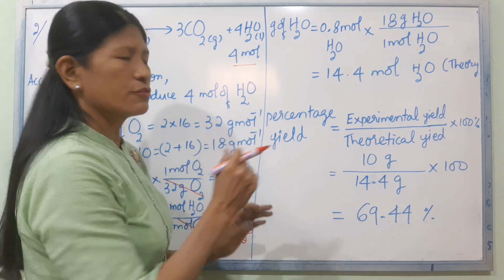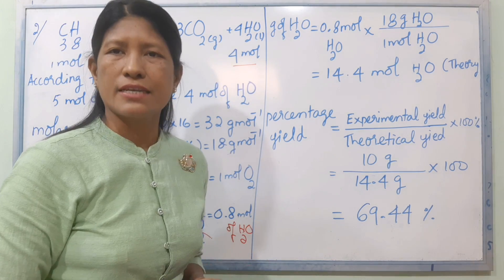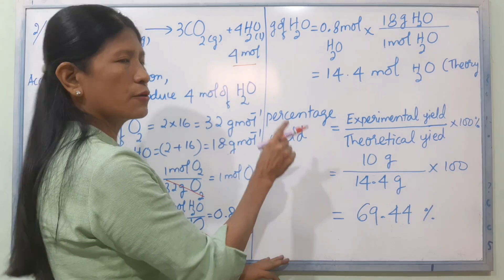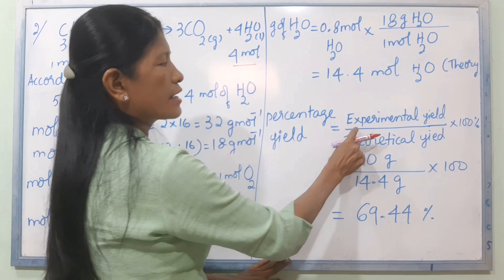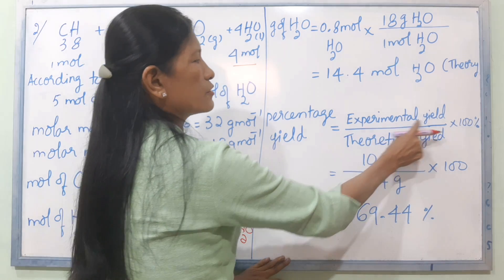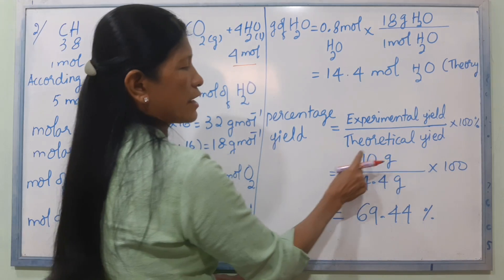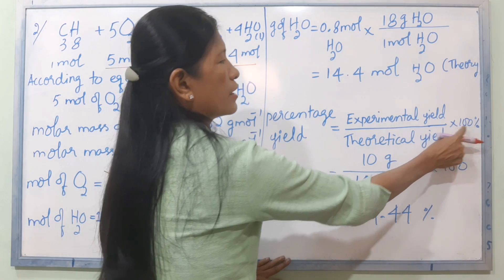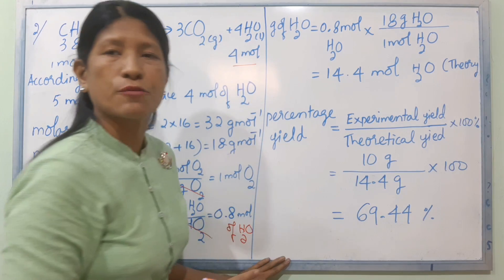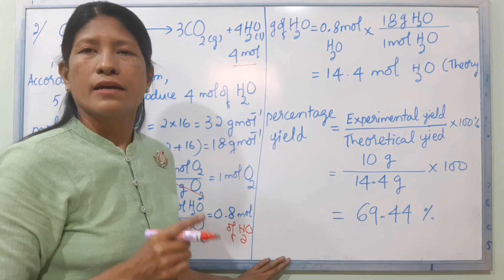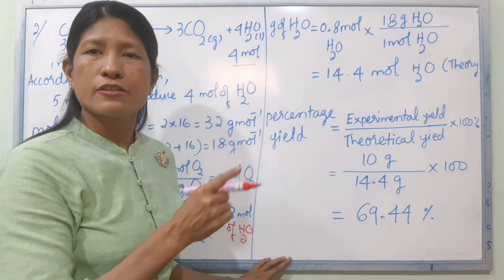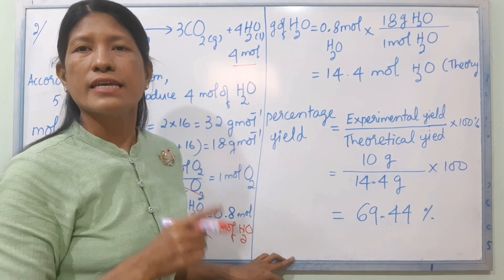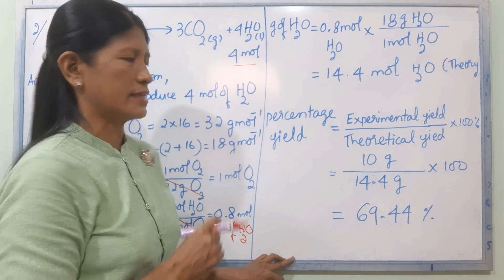Now to look at percentage yield of H2O, we have to use: percentage yield = (experimental g / theoretical g) × 100%.